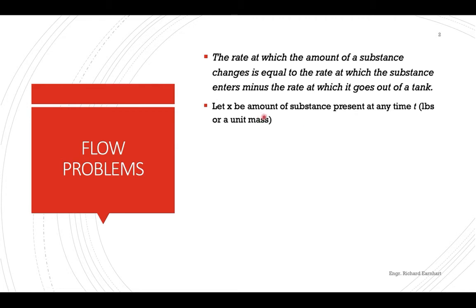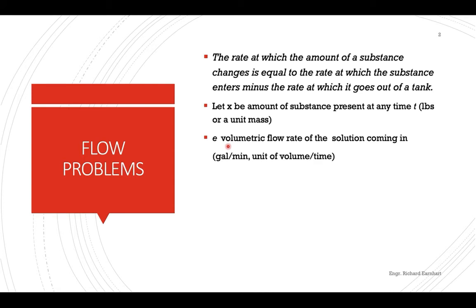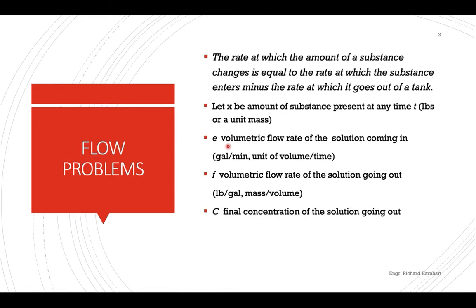Let x be the amount of the substance present at any time t, in pounds or any unit of mass. We'll be using the brine solution, so the solute will be the salt. E is the volumetric flow rate of the solution that comes in — gallons per minute or any unit of volume per time. F is the volumetric flow rate of the solution that goes out — pounds per gallon or any unit of mass per volume. C is the final concentration of the solution going out.